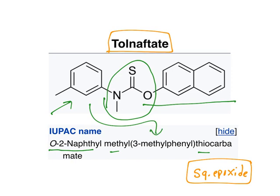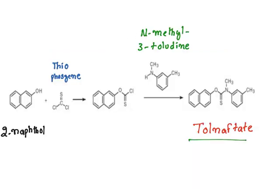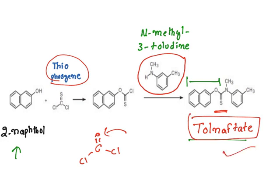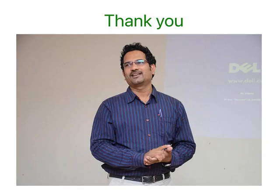For tolnaftate synthesis: the naphthol portion is 2-naphthol. Thio insertion is possible with thiophosgene — phosgene has C=O with two chlorides; when oxygen is replaced with sulfur it becomes thiophosgene. The condensation product is then combined with N-methyl-m-toluidine to give tolnaftate. Only these two drugs — miconazole and tolnaftate — require synthesis in the syllabus. If you like the video content, do subscribe and share.